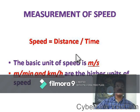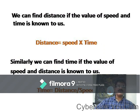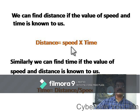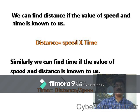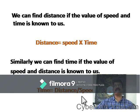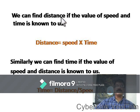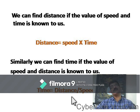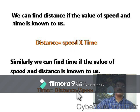Once you know the speed, it is easy to calculate distance and time from the equation. If you know speed and time, then distance equals speed multiplied by time. If you know distance and speed, then time equals distance divided by speed. There are three formulas: speed = distance/time, distance = speed × time, and time = distance/speed. You must be thorough with these three formulas.